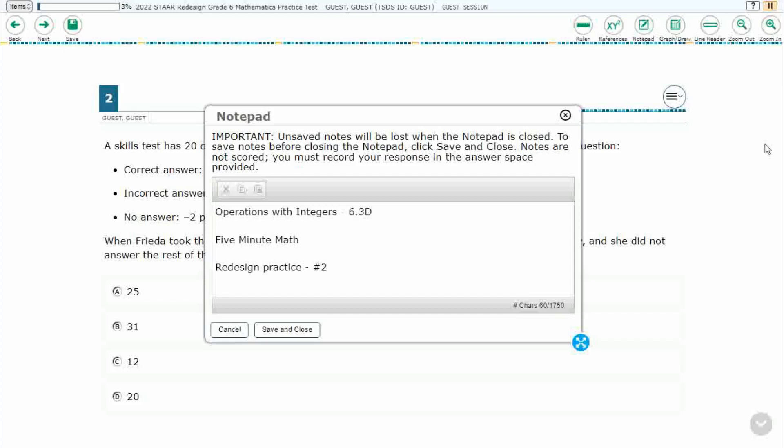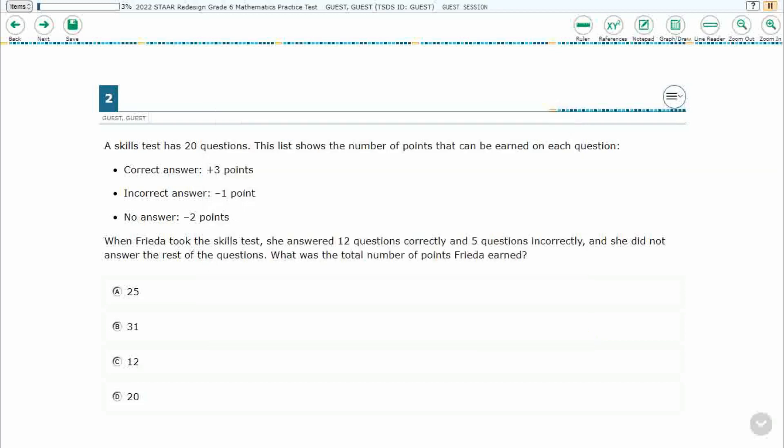Hello and welcome to 5-Minute Math. Today we are looking at the sixth grade concept of operations with integers. This is standard 6.3d in the great state of Texas and we are using item number two of the redesigned practice online star test. If you haven't done so already, please go ahead and take a moment to pause the video, work this problem out on your own, unpause it, and we will look at our answers together.